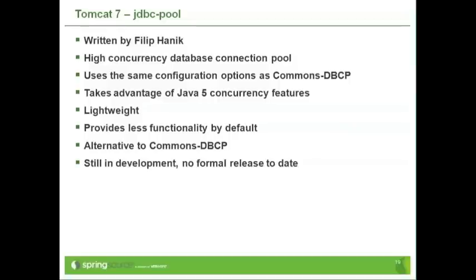Commons DBCP is single-threaded in terms of allocating and returning connections to the pool. So if you have a lot of concurrent requests all trying to either request a new connection or return an old one, you can see a bottleneck with commons DBCP. The high-concurrency connection pool that Filip wrote doesn't have that problem.